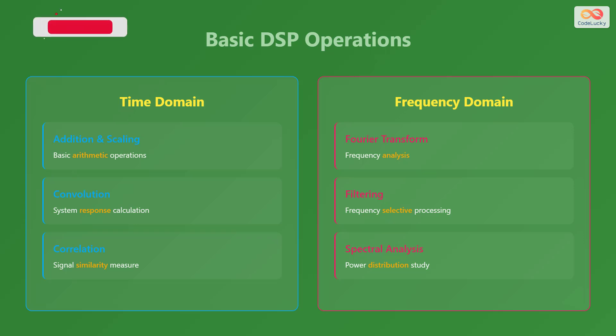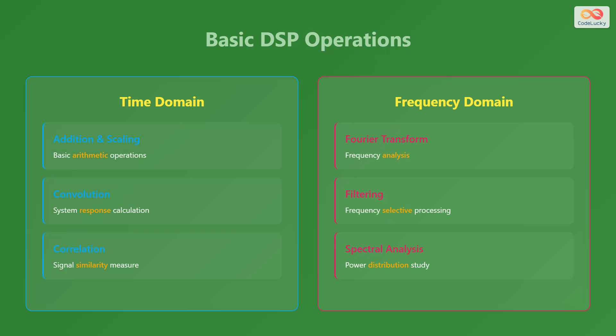Digital signal processing involves a variety of operations, broadly categorized into time domain and frequency domain operations. In the time domain, common operations include addition and scaling for basic arithmetic manipulations, convolution for calculating system responses, and correlation for measuring signal similarity. In the frequency domain, we have Fourier transform for frequency analysis, filtering for frequency selective processing, and spectral analysis for studying power distribution.